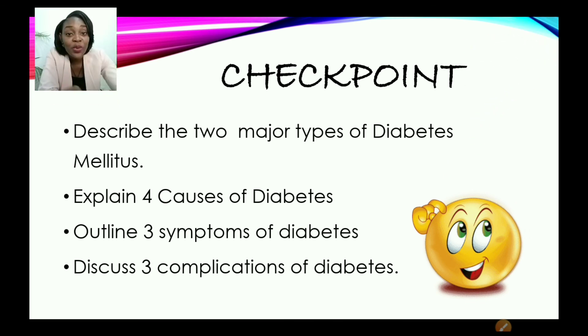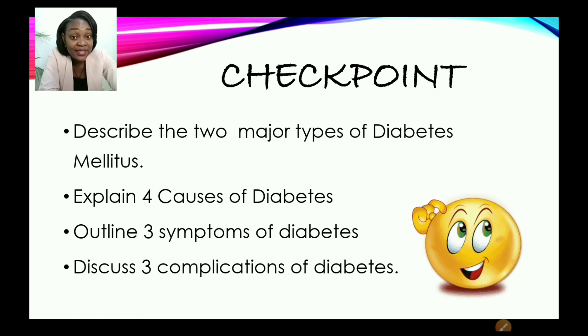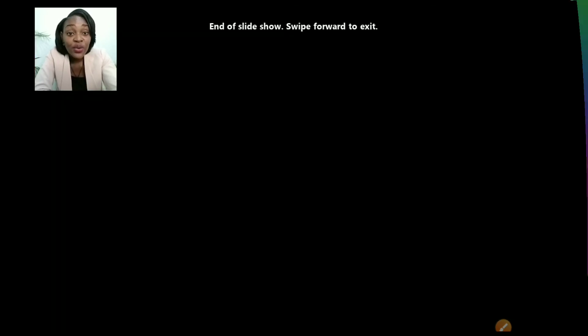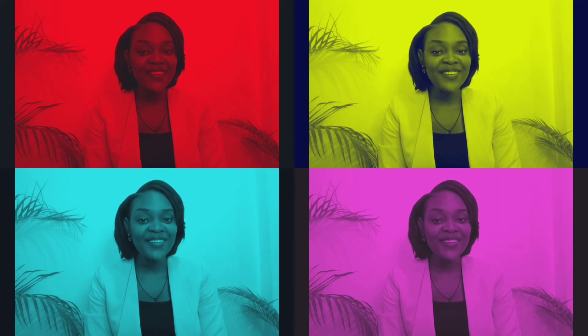Now, let us look at the final checkpoint. You should be able to describe the two major types of diabetes, explain four causes of diabetes, outline three symptoms of diabetes, and also discuss three complications of diabetes. You're awesome — you have made it to the end of the video. Need more content like this? Don't forget to click that subscribe button and the notification bell. Also, most importantly, don't forget to share with persons who may find this content useful. Thank you for watching Ferris Tutorials.